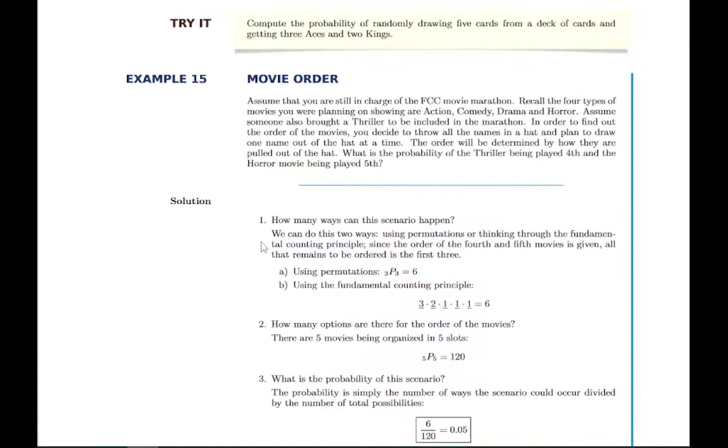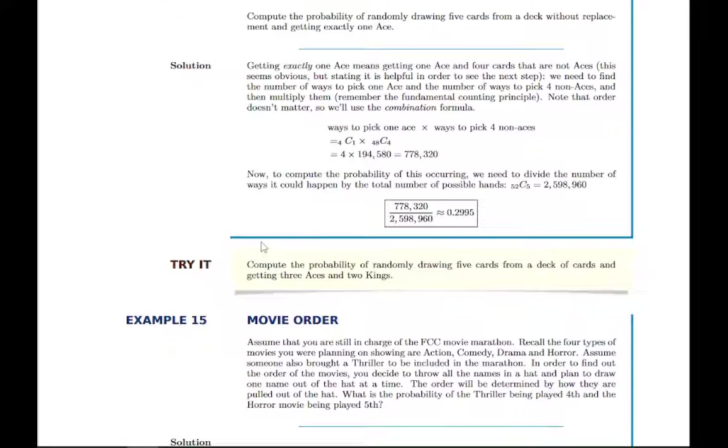So there's several examples of that just to practice using these counting principles, the fundamental counting principle, permutations, combinations, to answer probability questions. So that's section 4.4. Basically these three principles for counting without listing. You can use the fundamental counting principle when it applies, or permutations when you're selecting from some group and then arranging, and combinations when you're just selecting from the group and the order they're given in doesn't matter.